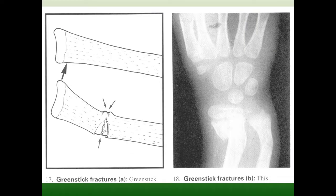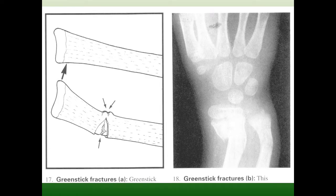The greenstick fracture is very common in children. The periosteum is usually not damaged, shift is not usually present, but angular deformity is present. Some angular deformity is acceptable in children but must be corrected if too large. The technique is called reduction — usually done as closed reduction — and the fracture is immobilized with a plaster of Paris or polyurethane bandage for approximately four weeks.